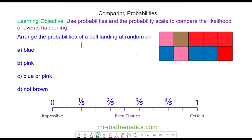Okay, so the probability of landing on a blue section. Well, there are ten possible sections, and three of them are blue. So it is three tenths, which is here. And this would be landing on a blue.